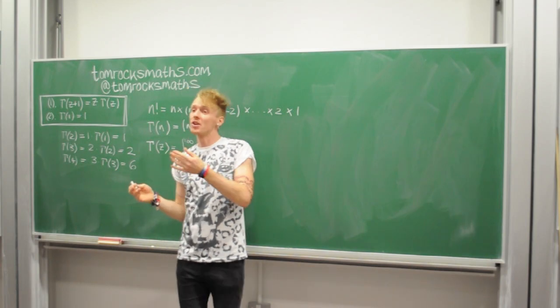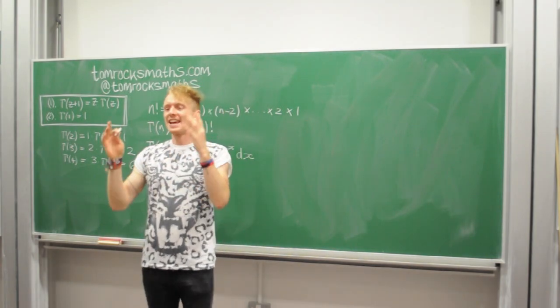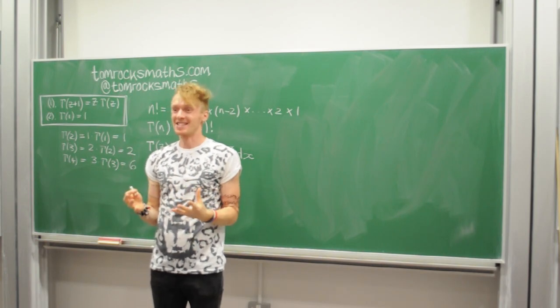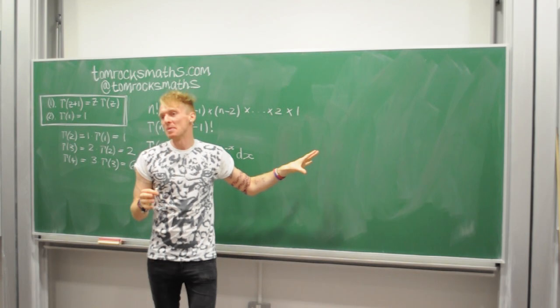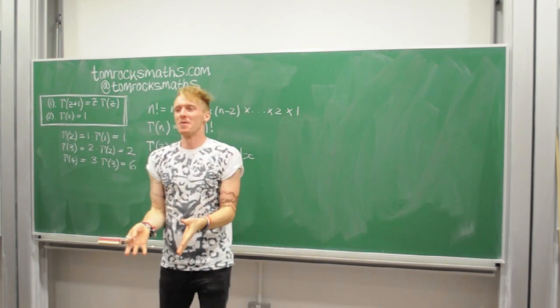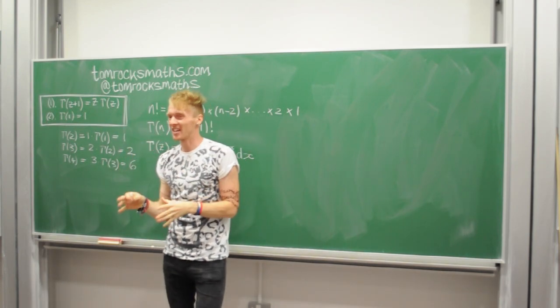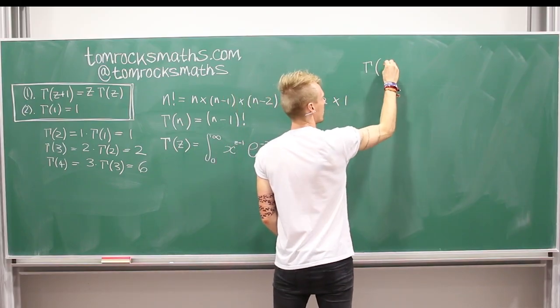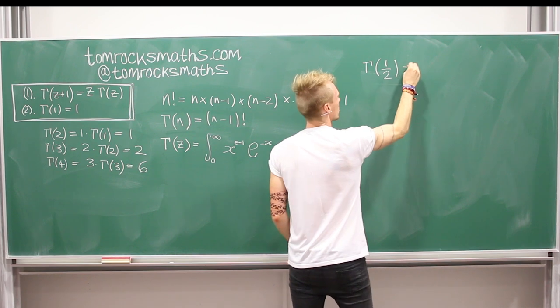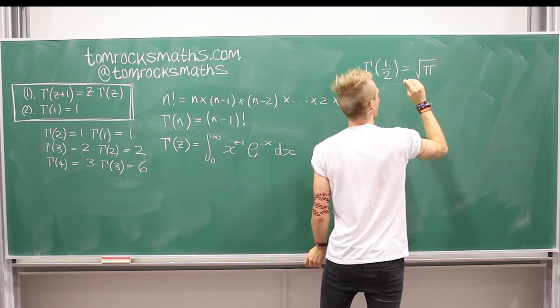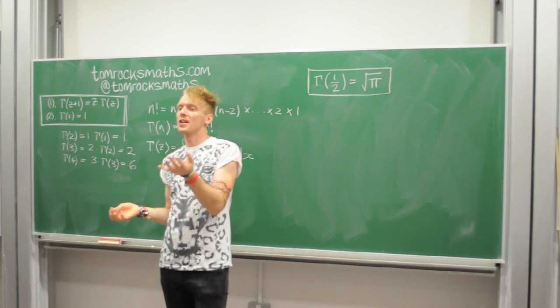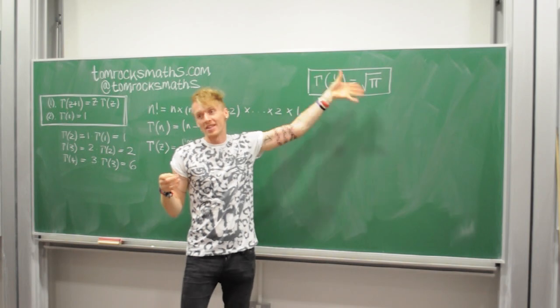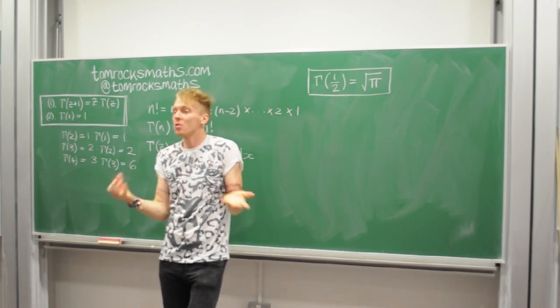The final thing that I want to show you about the gamma function is possibly the coolest property of it as a function. And I'm just going to write it on the board and hopefully blow you away, and then we'll take a closer look and see why that is the case. Gamma of a half is equal to the square root of pi. So our starting point is going to be, well, let's work out what gamma of a half is, pretending that we don't know that it's the square root of pi, or that I haven't told you that.